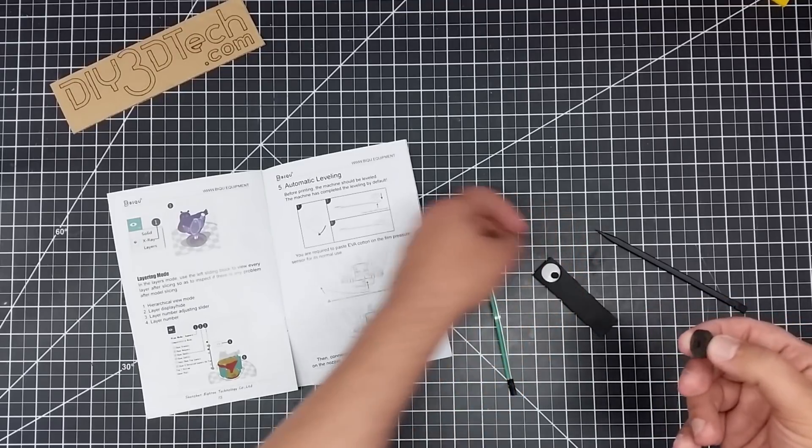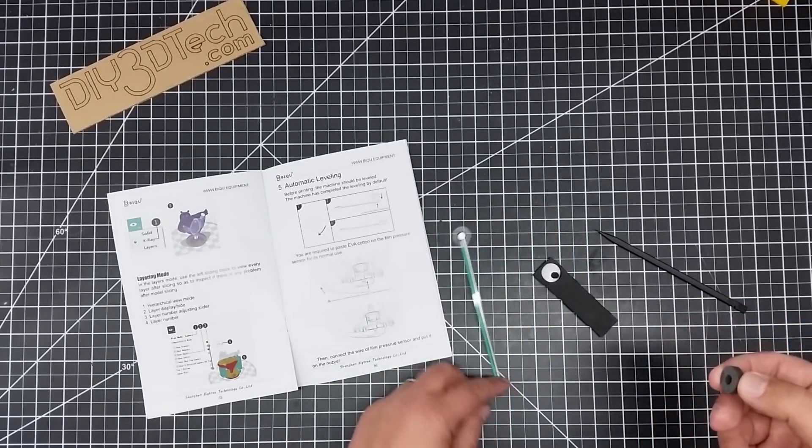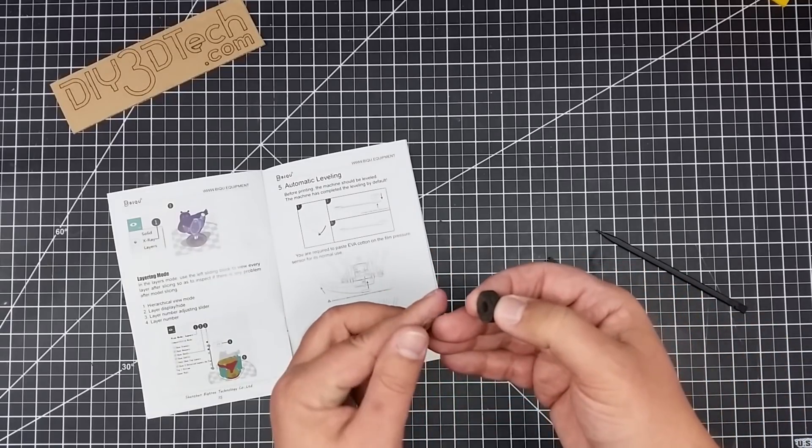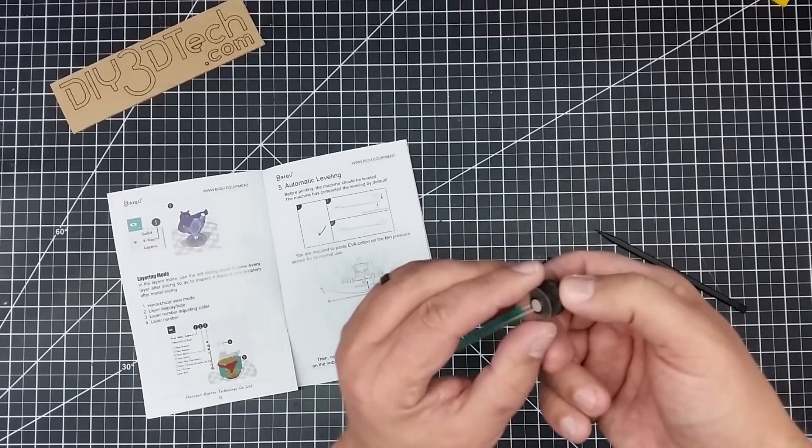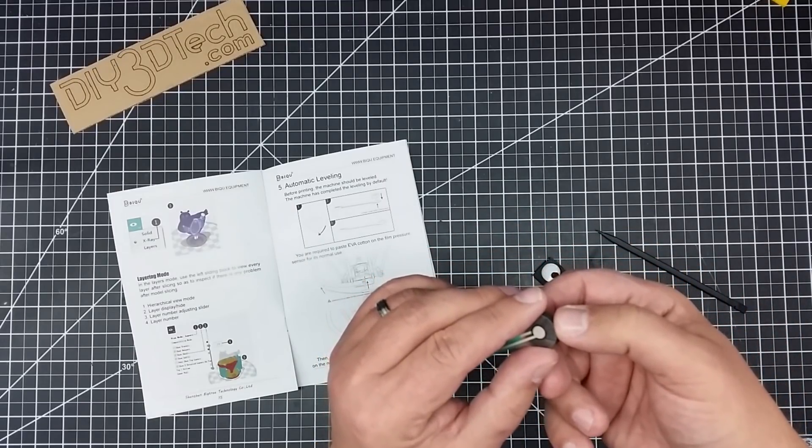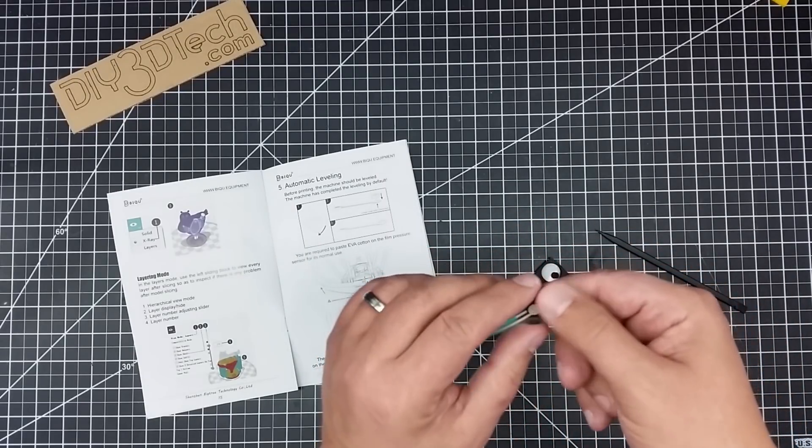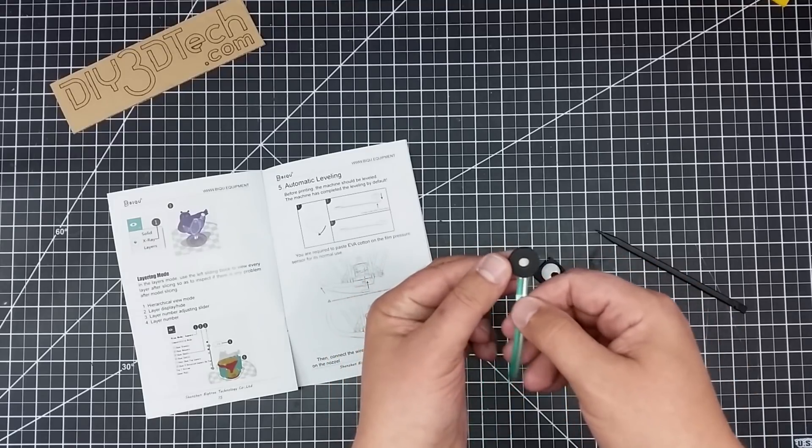And then what we're going to want to do is again make sure that the characters are down, they are, and then we're going to want to center this so that the little pad is in the center here. So I'm going to go ahead and do that and boom, Bob's your uncle, and so this is set on there.